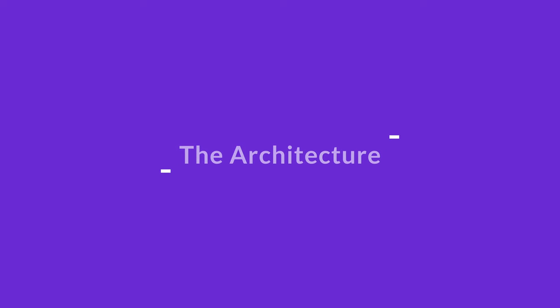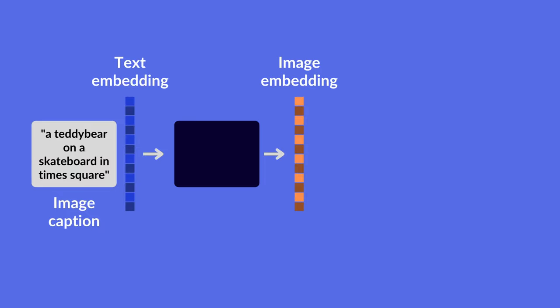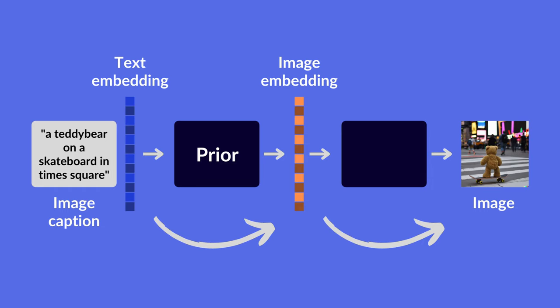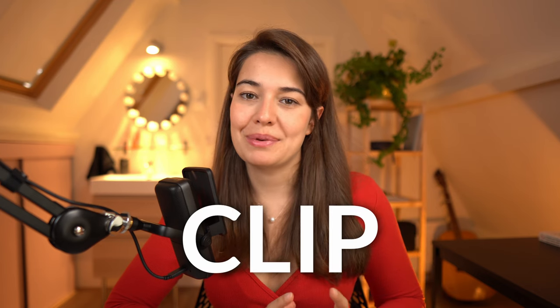Let's take a look inside and understand how it works. DALL-E 2 consists of two parts: one to convert captions into a representation of an image, called the prior, and another to turn this representation into an actual image, called the decoder. The text and image representations used in DALL-E 2 come from another technology, also developed by OpenAI, called CLIP.